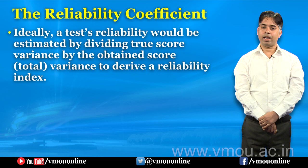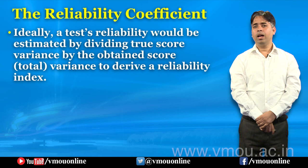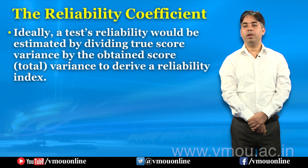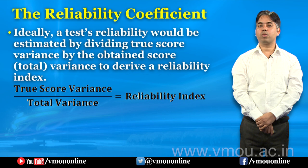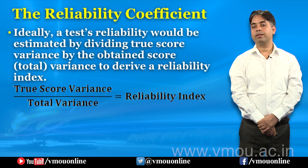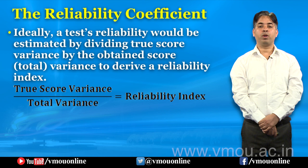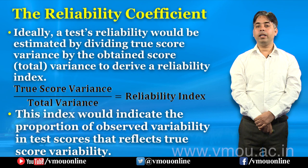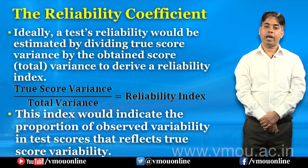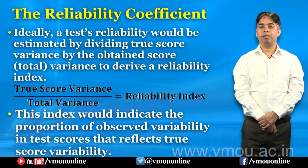Now we will try to understand the concept of reliability coefficient. Ideally, a test's reliability would be estimated by dividing true score variance by obtained score variance to derive a reliability index. This index would indicate the proportion of observed variability in test scores that reflects true score variability. So the formula is: true score variance upon total variance equals reliability index.